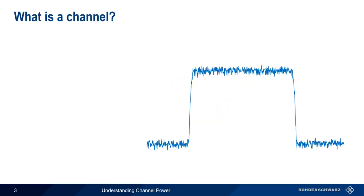In order to understand channel power, we first need to define what we mean by a channel. When signals are transmitted by wireless communications and broadcast systems, they're often assigned specific frequency ranges, or channels. Normally, most of the signal power should stay within this channel.